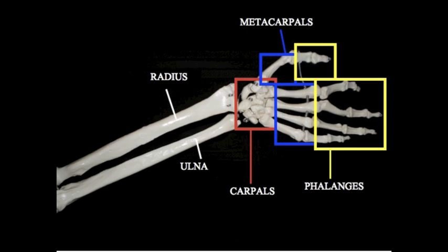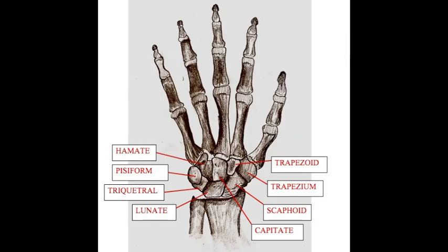Let's explore the individual bones that make up the carpals. The eight bones that make up the carpals are individually known as the hamate, the pisiform, the trichetral, the lunate, the trapezoid, the trapezium, the scaphoid, and the capitate.